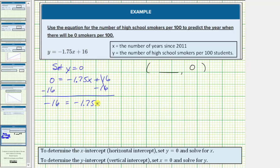To solve for x, we undo this multiplication by dividing both sides by negative 1.75. Looking at the right side, this would be 1x or x.